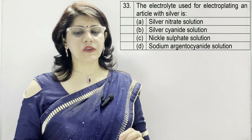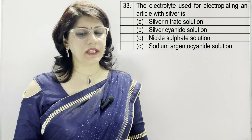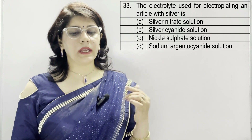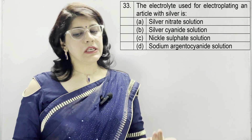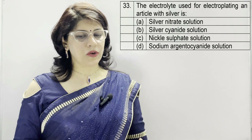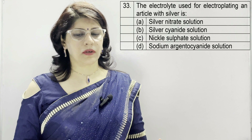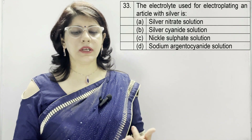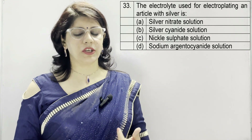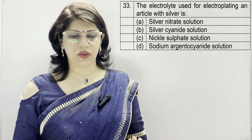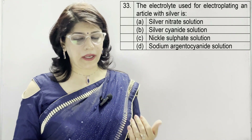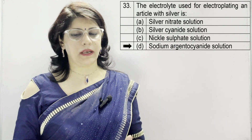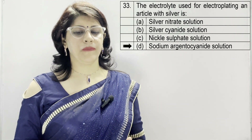Question number 33: the electrolyte used for electroplating an article with silver is — A: silver nitrate solution, B: silver cyanide solution, C: nickel sulfate solution, D: sodium argentocyanide solution. The correct option is D — sodium argentocyanide solution.